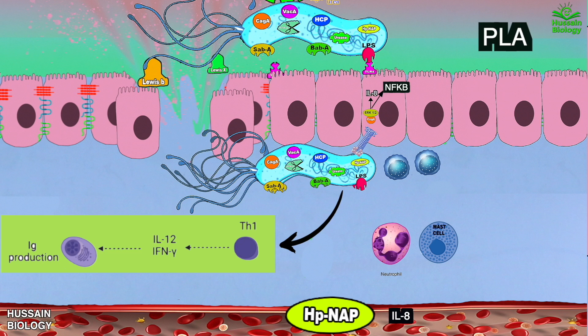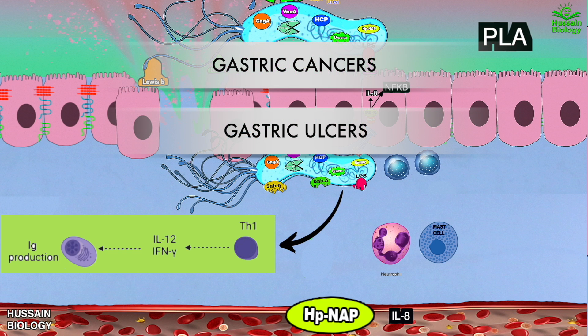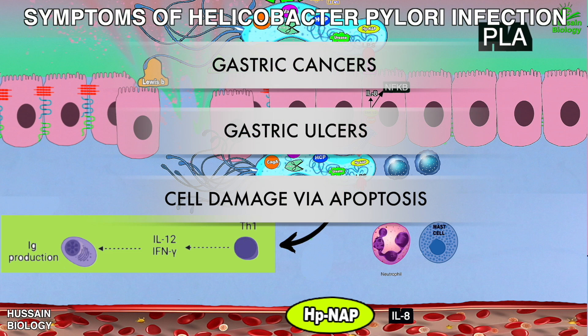The release of these pro-inflammatory cytokines leads to gastric inflammation and gastric mucosal injury. We also have the SCFA factor from bacteria which triggers an immune response causing inflammation. At the end, we can see how all these virulence factors drive pro-inflammatory pathways that lead to gastric cancers, ulcers, cytotoxicity, cell damage, and many other damaging processes.